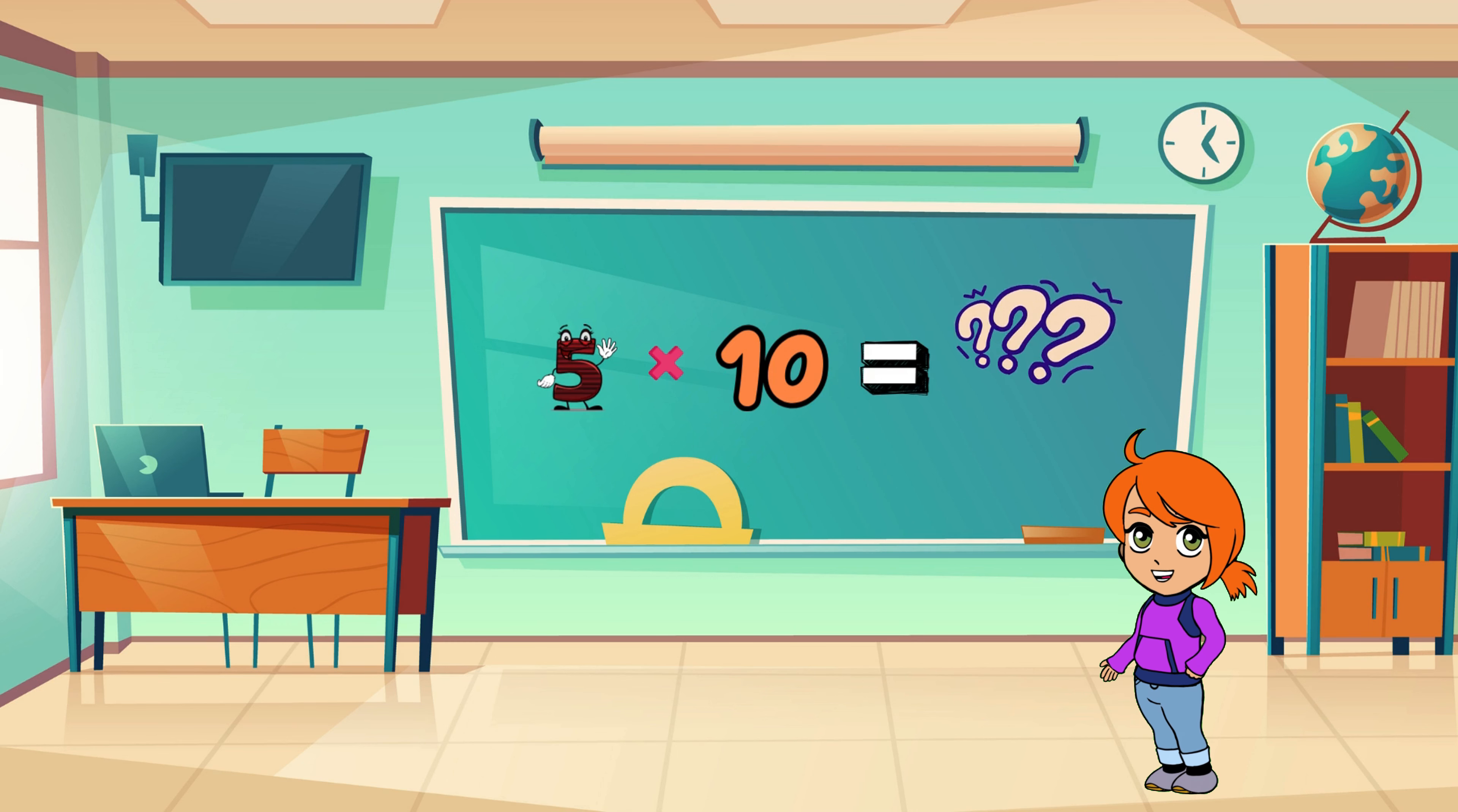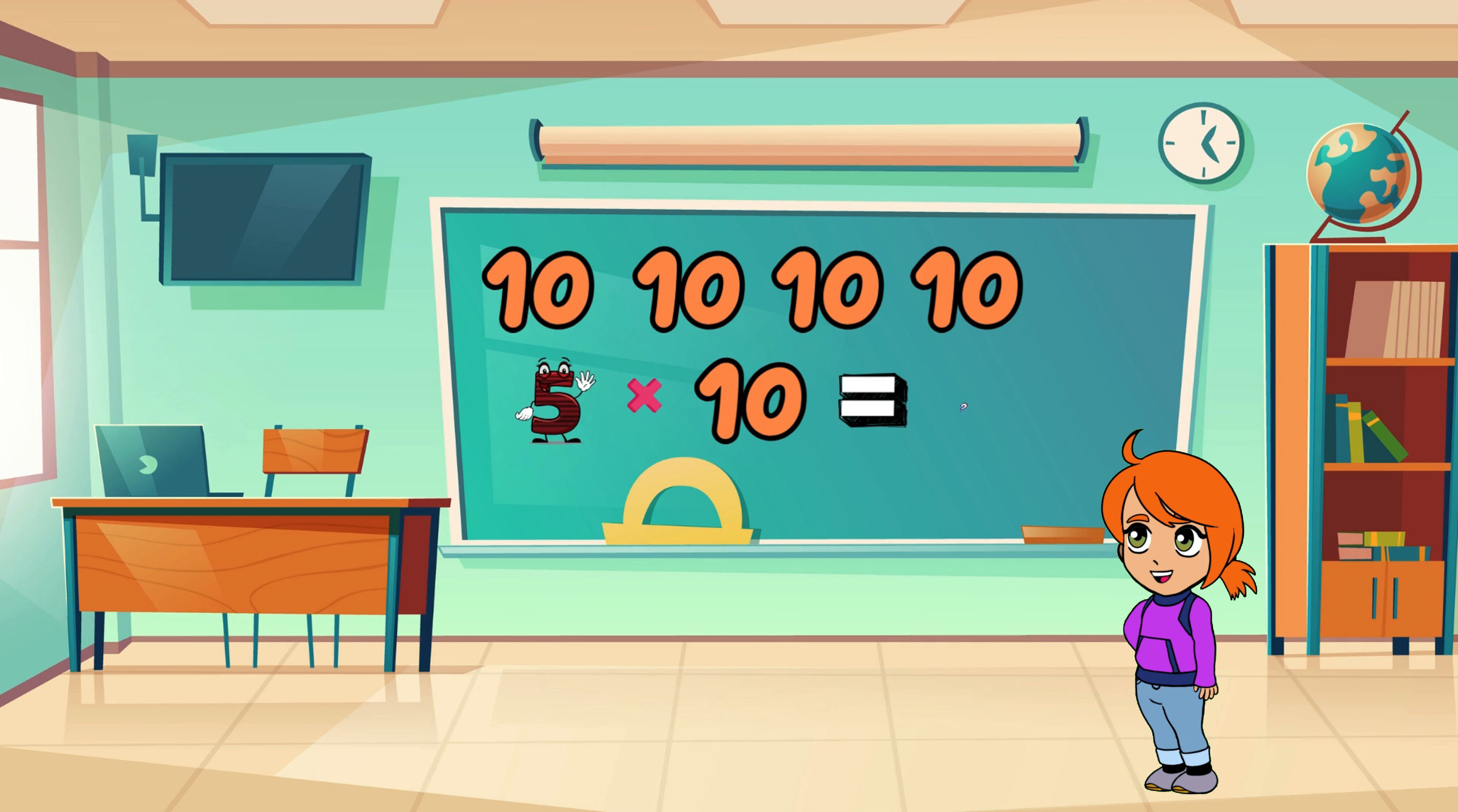Feeling confident? Let's speed things up. How about 5 times 10? Think about it—it's just 10 added five times, so we have 10, 20, 30, 40, 50. See how easy that was? Multiplying by 10 is like counting by tens.